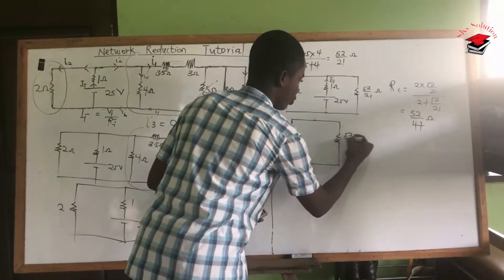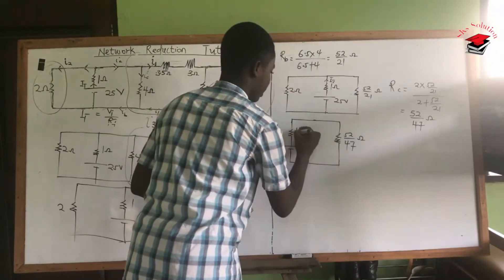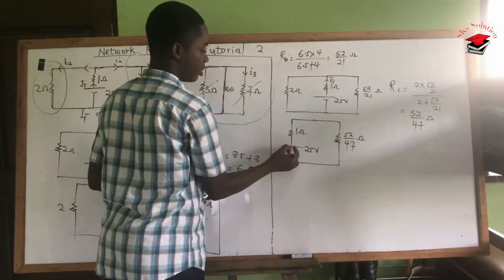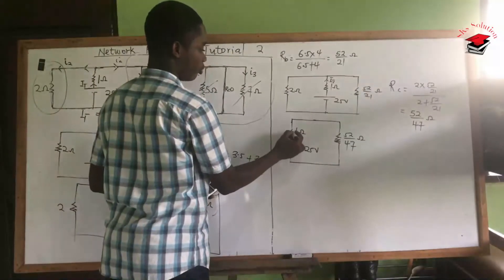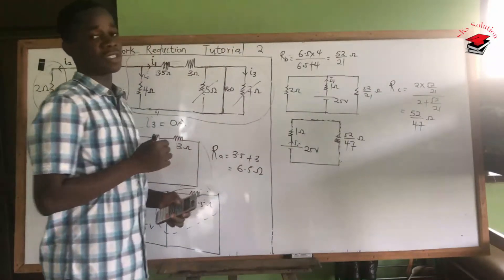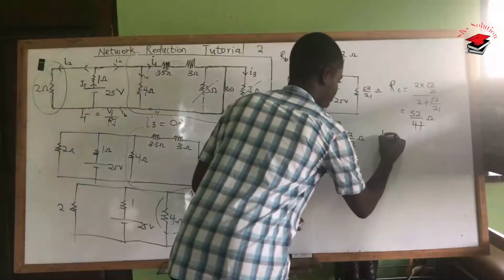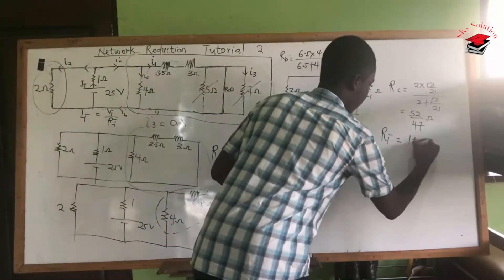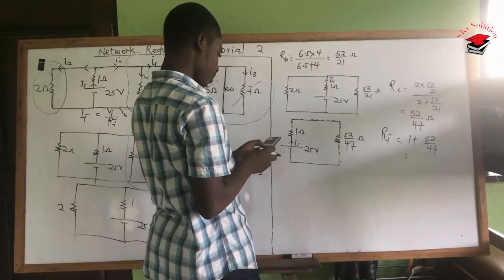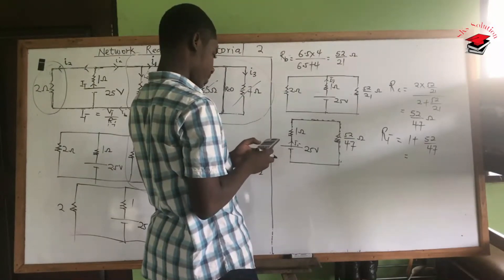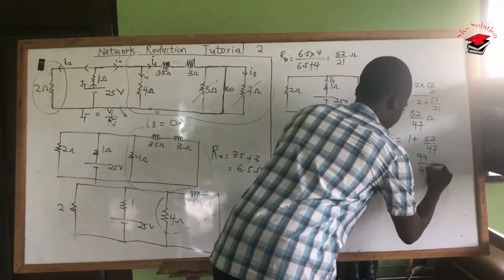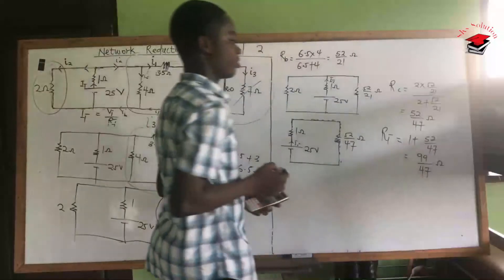In the final simplified circuit, the total current flows through the 1-ohm and then through the 52/47-ohm equivalent, so these are in series. Therefore the total resistance RT equals 1 plus 52/47, which equals 99/47 ohms.